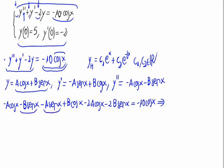We have three terms with sine of x and three terms with cosine of x. The sine terms give a common factor of sin(x)·(-a - 3b), and the cosine terms give (-3a + b)·cos(x), all equal to -10·cos(x).